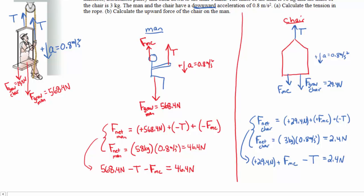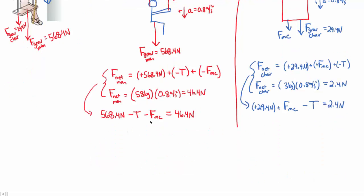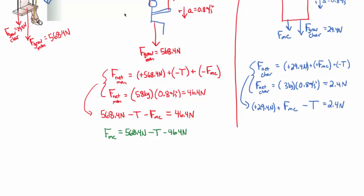Now I have two equations with two unknowns. I'm going to use substitution — solving for FMC from the man's equation and substituting into the chair's equation. Taking FMC to the other side of the man's equation gives FMC equals 568.4 minus T minus 46.4 newtons, which simplifies to FMC equals 522 minus T.